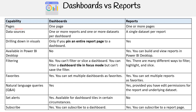For the pages capability, dashboards can only have one page, whereas reports can have one or more pages. For data sources, dashboards can have one or more reports and one or more datasets per dashboard. Reports can only have a single dataset per report.